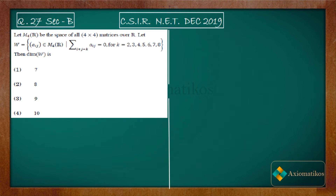Let M4(R) be the space of all 4×4 matrices over R. They are defining its subspace W like this: it consists of all those matrices for which the summation of a_ij is 0, where the summation is running over indices with i plus j equal to k. We have to find out the dimension of W.